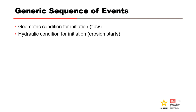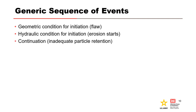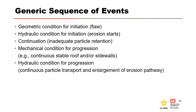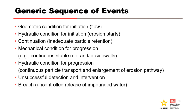Initiation considers the hydraulic condition for internal erosion to start by one of the initiating mechanisms. Continuation considers the potential for an unfiltered exit and the particle retention capability of any filters or transition zones. Progression is decomposed into mechanical and hydraulic conditions: the mechanical condition considers the stability of the erosion pathway including roofs of pipes or cracks and stable sidewalls; the hydraulic condition involves continuous particle transport and enlargement of the erosion pathway. Intervention is not a phase but can arrest potential failure mode development; if detection and intervention are unsuccessful, breach occurs.